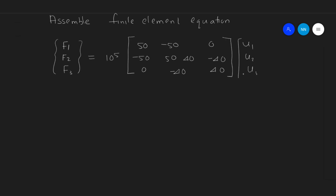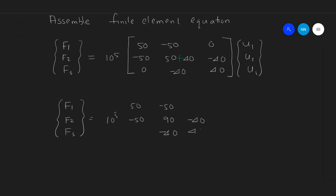The middle value will be 50 plus 40, giving a total of 90. So the assembled finite element equation will be: force matrix equals stiffness matrix 10⁵ × [50, -50, 0; -50, 90, -40; 0, -40, 40] times displacement matrix [U1, U2, U3]. Let this be equation number 3.